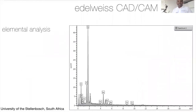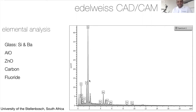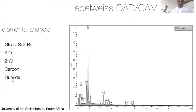Looking at the elemental analysis — what is the composition of the Edelweiss CAD CAM block? High amounts of silica and barium glass are the main components, indicating a pure single glass phase. It contains aluminium oxide for strength, zinc oxide for antibacterial properties, and fluoride — again for antibacterial benefit as well as to support remineralization through hydroxyapatite fluoride release or uptake. A small amount of carbon represents the resin portion, giving that little flexibility and ease of repairability in the mouth.